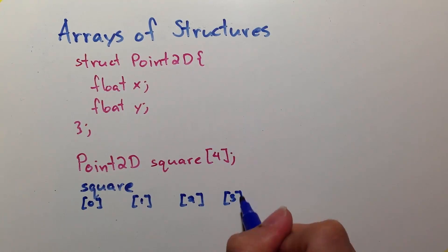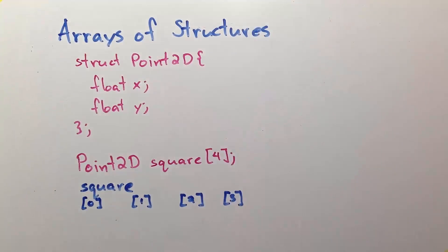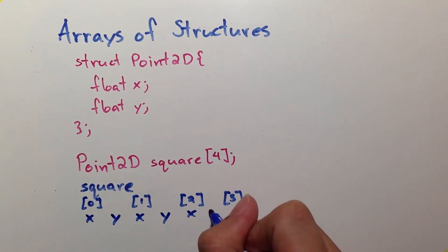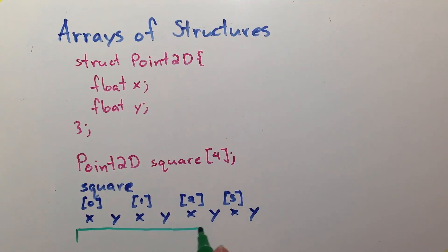each having x and y children. Thus, in memory, it looks something like this. You have your 4 children, each having x and y, and each variable has a space.